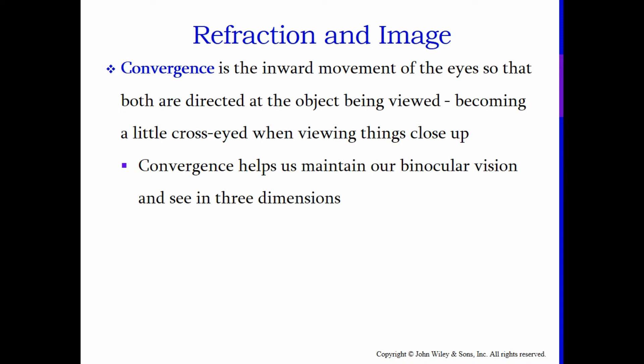Convergence is the inward movement of the eyes so that both are directed at the object being viewed. The closer the object is to your face, the more your eyes move medially to focus on it. When you look at something far away, both eyes point straight ahead in parallel. If you're watching this right now, try to make your right eye look to the right and your left eye look to the left — you can't do it. Our brains aren't wired to handle that kind of stimulus. Convergence helps us maintain our binocular vision and see in three dimensions.